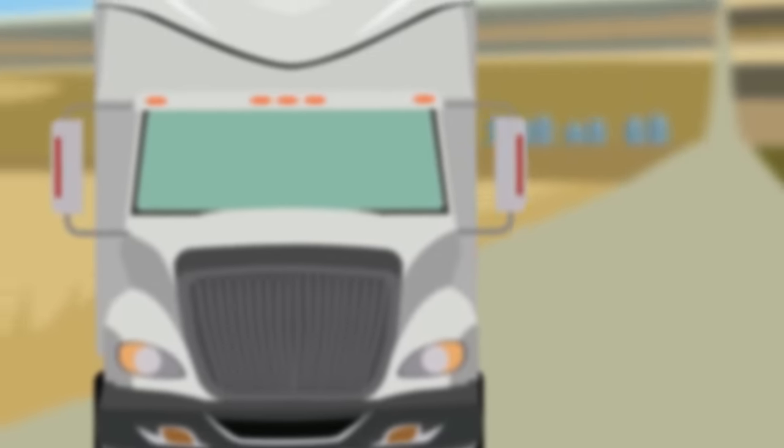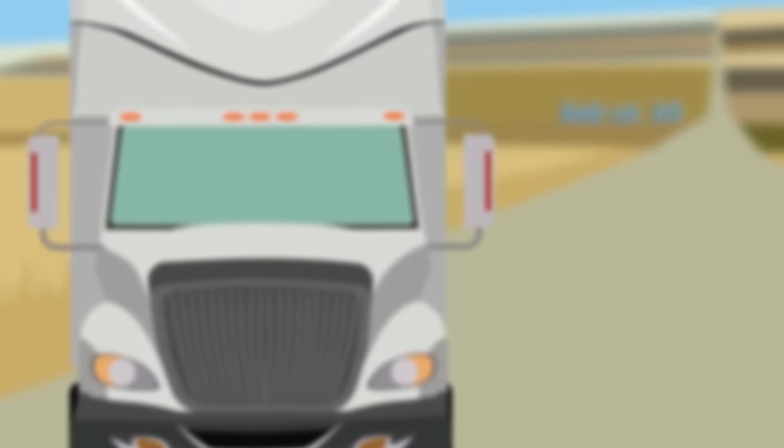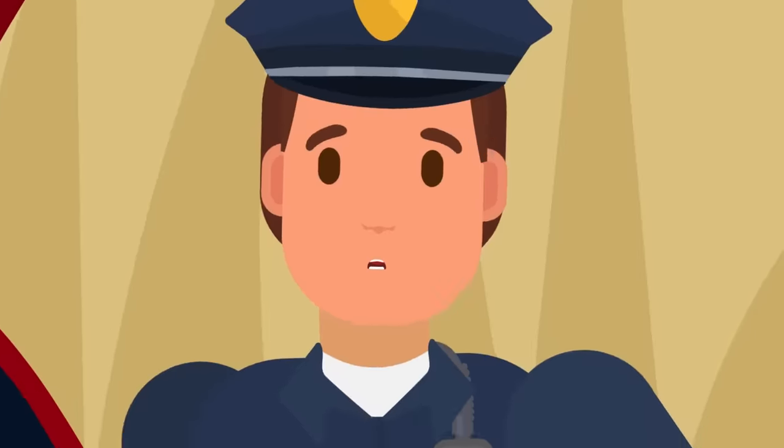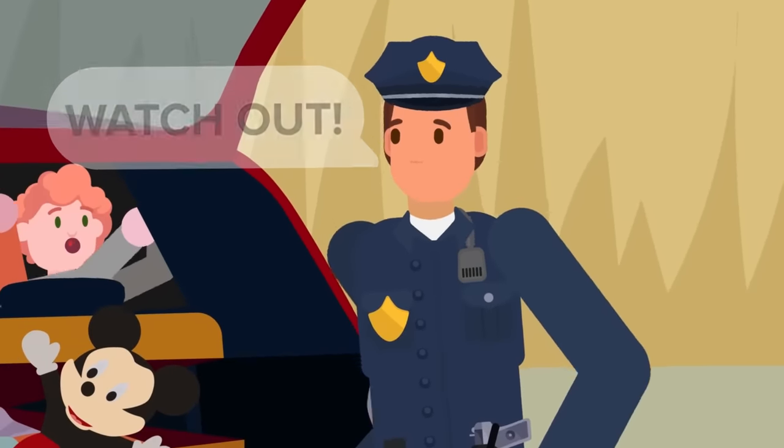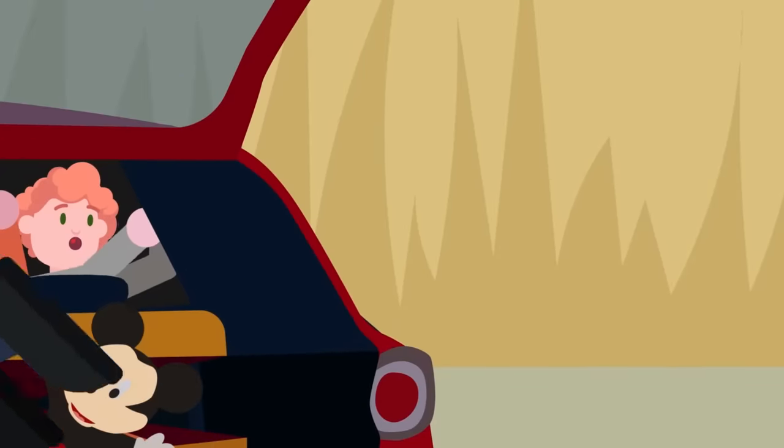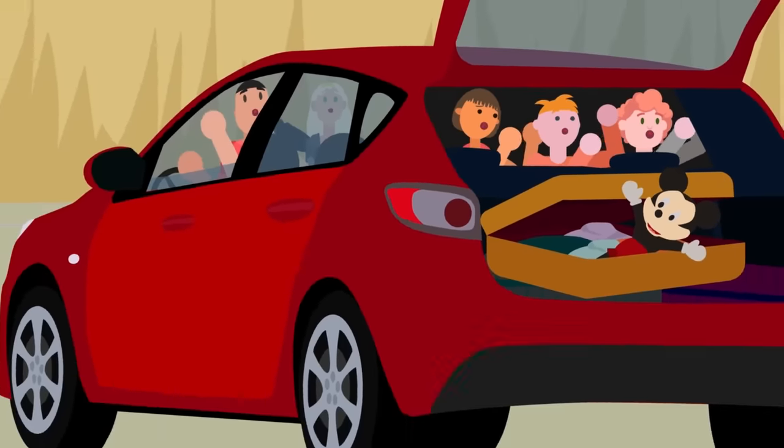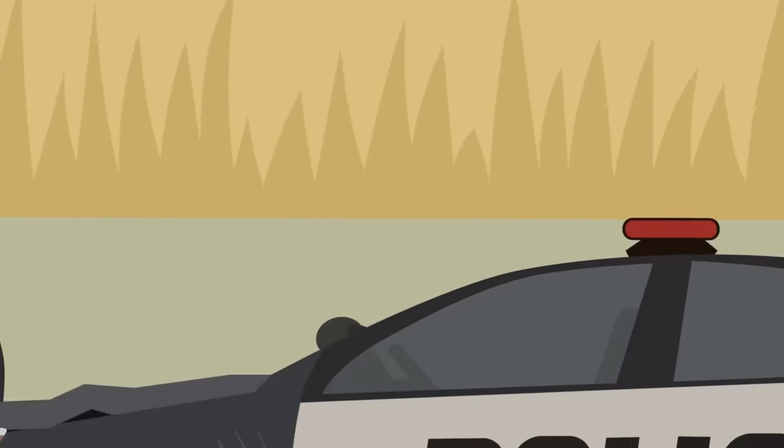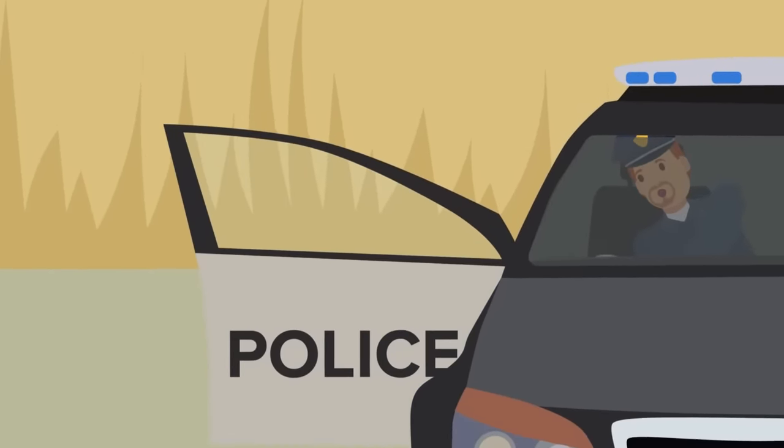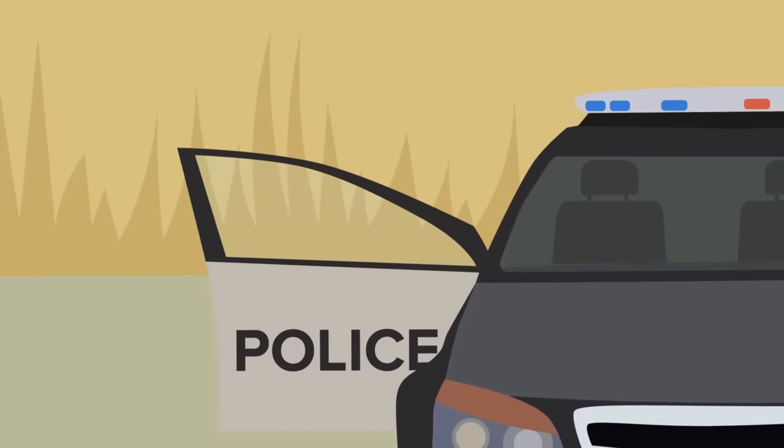He spun around to see the hulking shape of the semi-truck barreling straight towards him, Agent Smith, and a family of five. With only two seconds to react, he yelled out at the top of his lungs and dived out of the way, leaving the trunk of the car wide open with five screams emerging from inside. Smith, who had been sitting in one of the cruisers, only just managed to get out before the semi made contact.